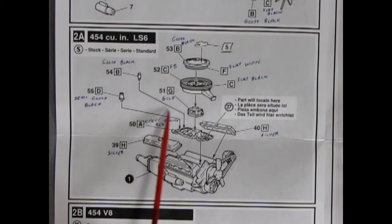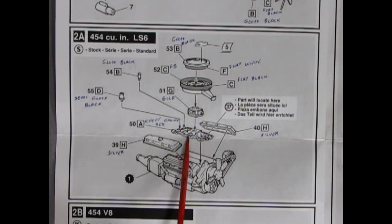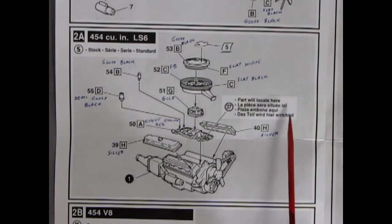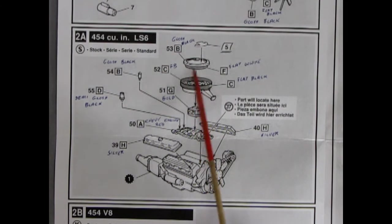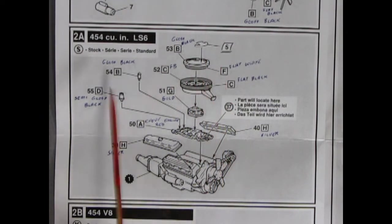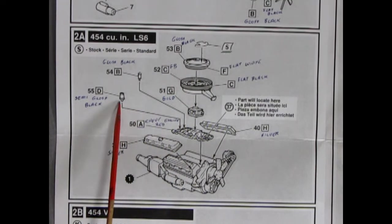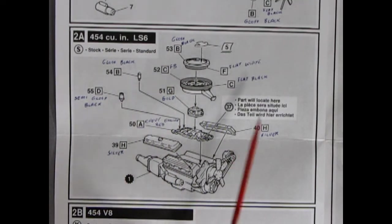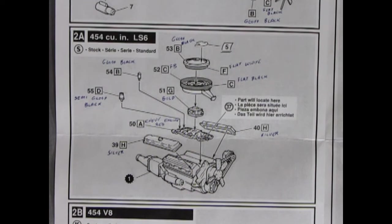Here, of course, is our coil going onto our intake manifold. There's the valve covers going on. They say to paint them silver, so I guess they're not painted. Flat black for the thing there. Flat white for our open air element. Gloss black, there's a decal goes on here for air cleaner. There's our distributor. And that's basically the LS6, the stock version.